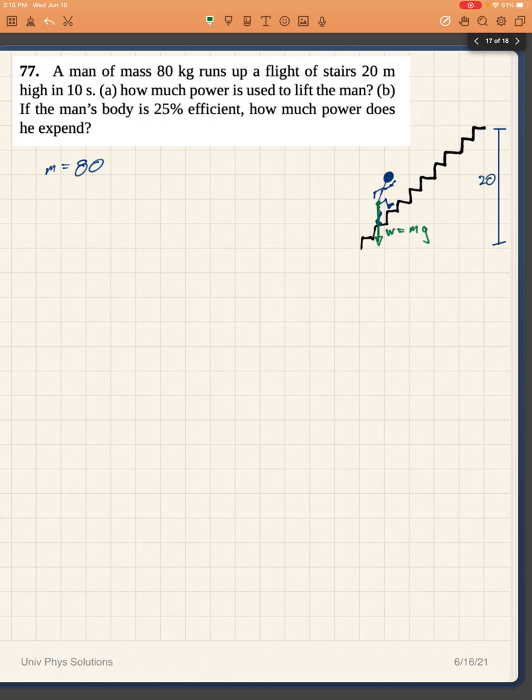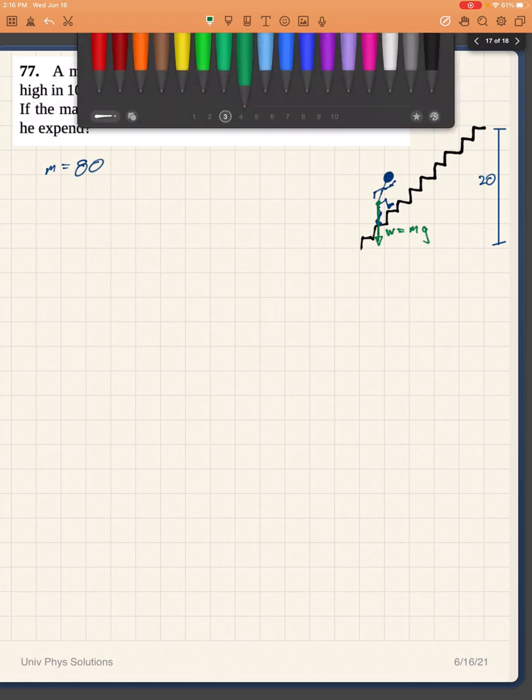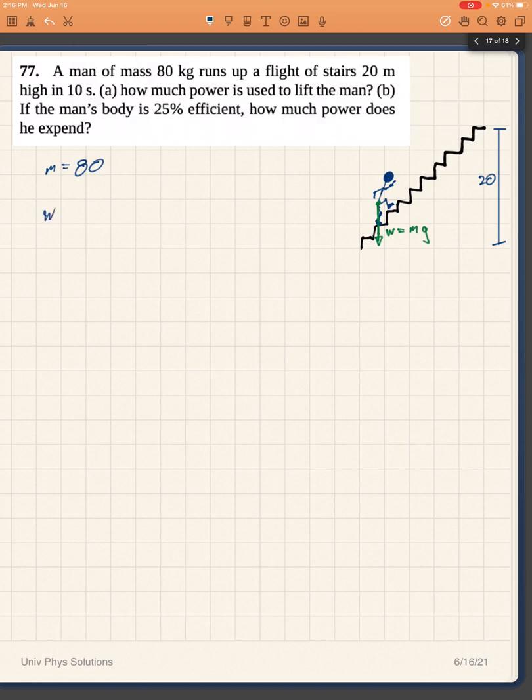So then our equation work equals F dot ds simplifies to F, the force of gravity, times the displacement d, which in this case is going to be mgh. You recognize that that is the same as his change in potential energy.